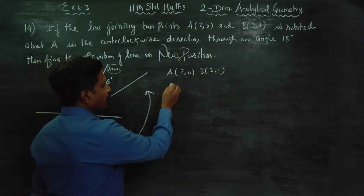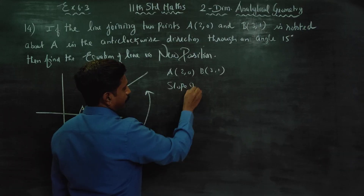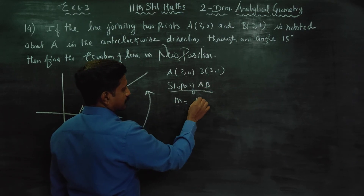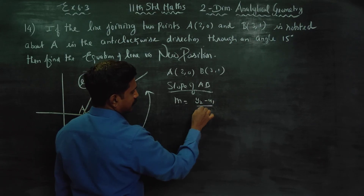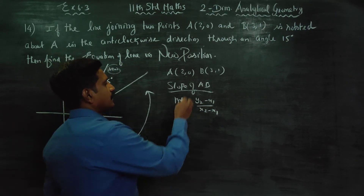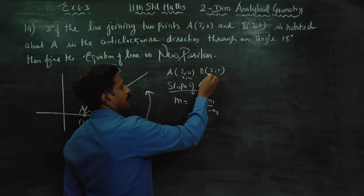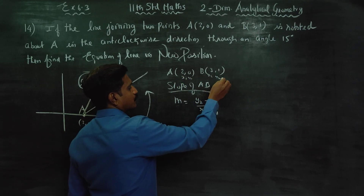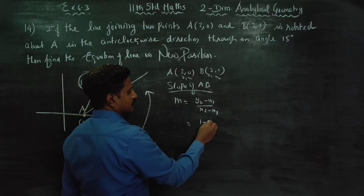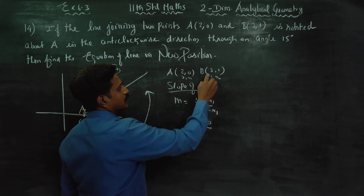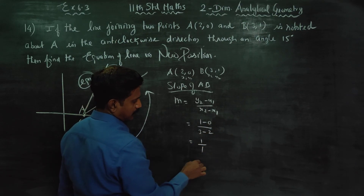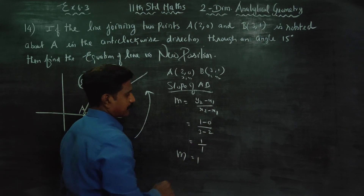First, find the slope of AB. Slope of AB = (Y2 - Y1) / (X2 - X1). This is the two-point formula from 10th standard. X1, Y1 = (2, 0) and X2, Y2 = (3, 1). So slope = (1 - 0) / (3 - 2) = 1/1 = 1. This is my slope M.